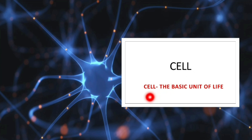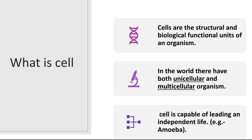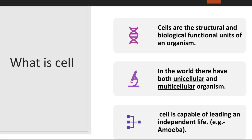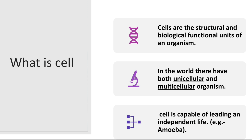What is a cell? The first point is: cells are the structural and biological functional units of an organism. Here we get two terms — first, structural, and second, biological functional. Structural unit means if we see the structure of an organism, we will find that the organism is formed with cells.